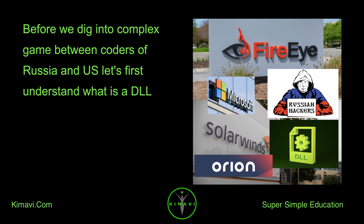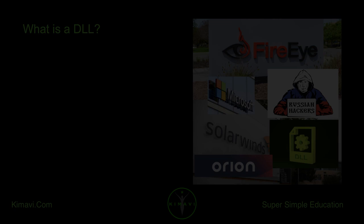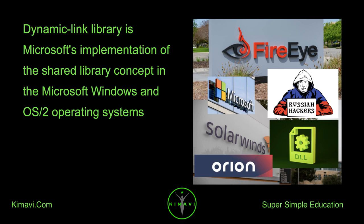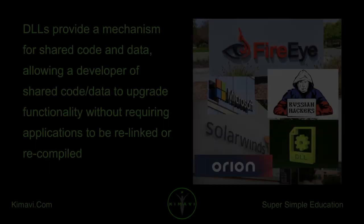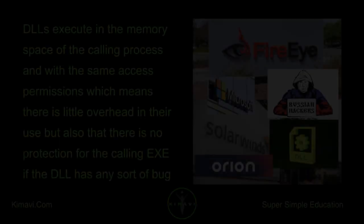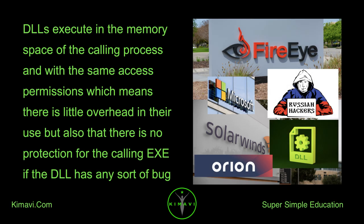Before we dig into the complex game between coders of Russia and the U.S., let's first understand what is a DLL. Dynamic Link Library is Microsoft's implementation of the shared library concept in the Microsoft Windows and OS/2 operating systems. DLLs provide a mechanism for shared code and data, allowing a developer to upgrade functionality without requiring applications to be relinked or recompiled. DLLs execute in the memory space of the calling process and with the same access permissions, which means there is little overhead in their use, but also no protection for the calling EXE if the DLL has any sort of bug.